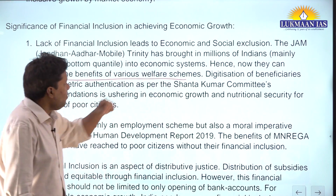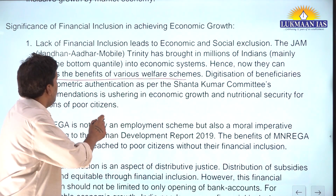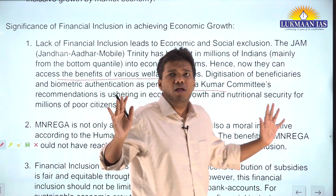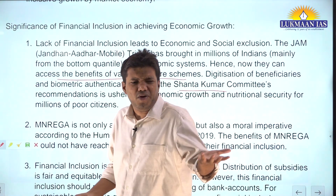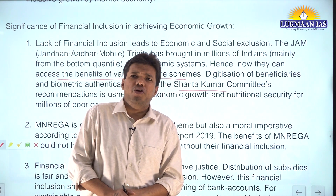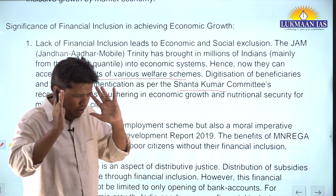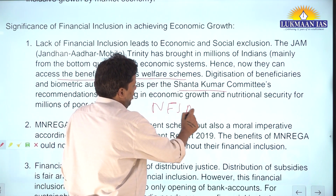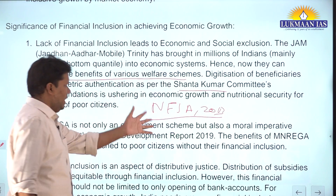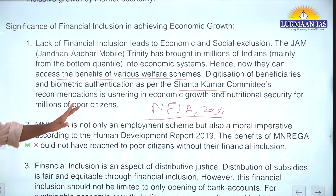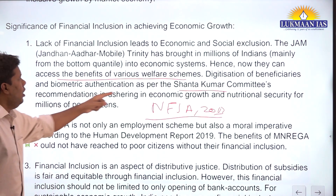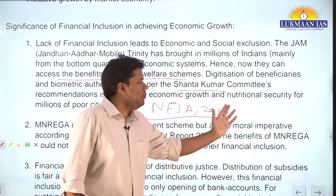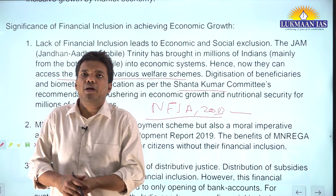Sustainable growth through digitization - the Shanta Kumar Committee report on restructuring of FCI said all beneficiaries need to be digitized. This is now also a provision in the National Food Security Act 2013. When beneficiaries have accounts, they ultimately become part of financial inclusion, reducing both exclusion error and inclusion error.